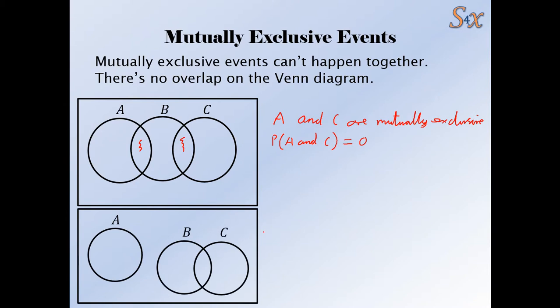Well, this one, which events are mutually exclusive? Well, B and C, there's an overlap, so they aren't mutually exclusive. But A and B are mutually exclusive.